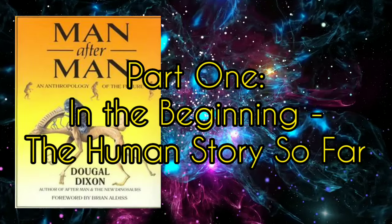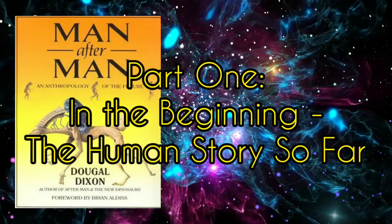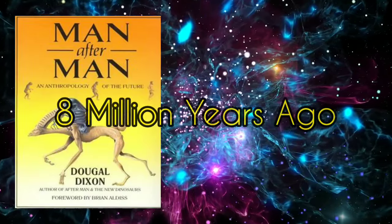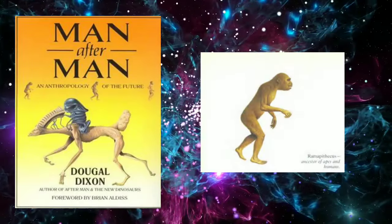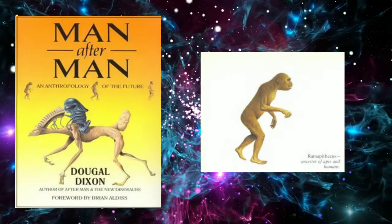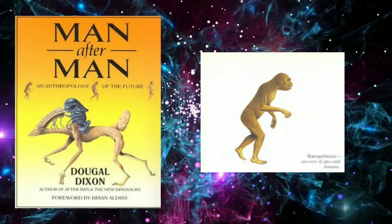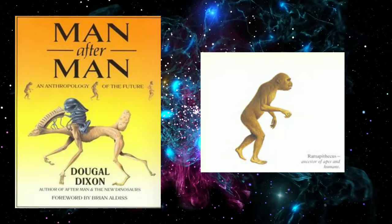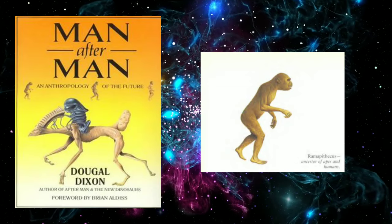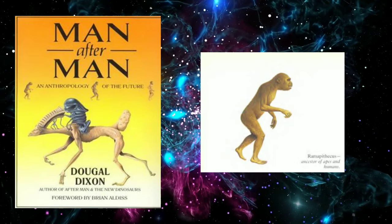Part 1: In the beginning. The human story so far. Eight million years ago. Her ancestors lived in the treetops that once covered the area. Indeed, her relatives still live in the forests of the steamy lowlands, climbing the branches, eating the soft fruits and grubs. Her way of life is, however, completely different.